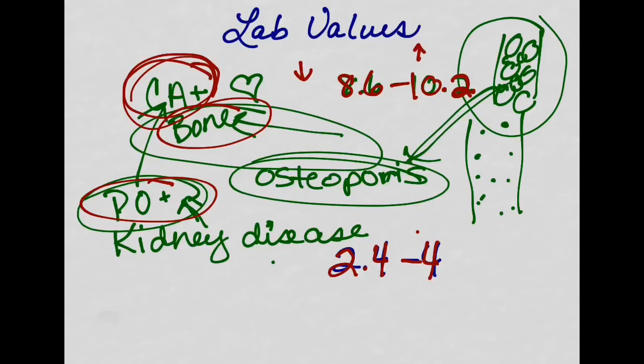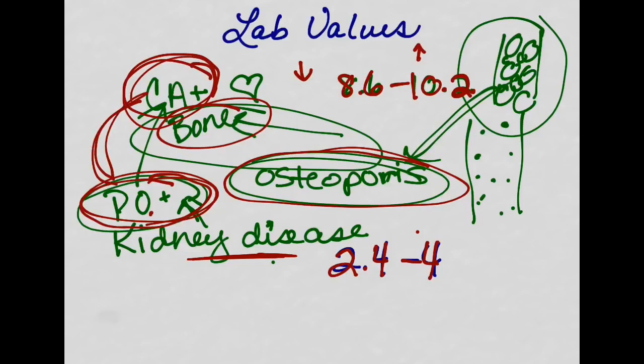How does this play a role with osteoporosis? Remember that's breakdown of the bone. When I think of kidney disease, remember kidney disease can build up, and if the balance is off between the calcium and phosphorus, phosphorus can start pulling calcium out of the bones and really increase the risk of osteoporosis.